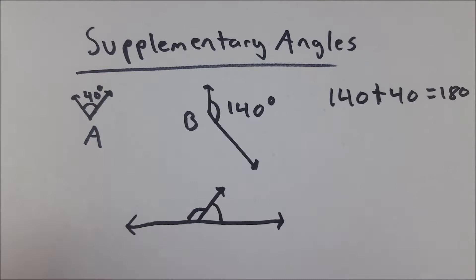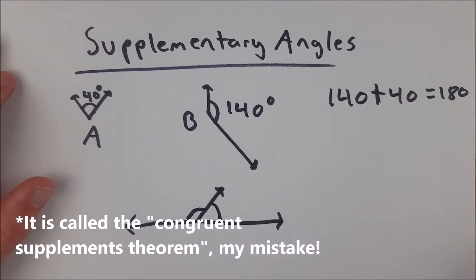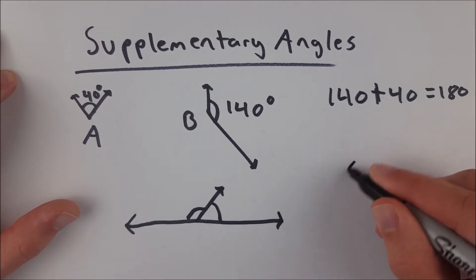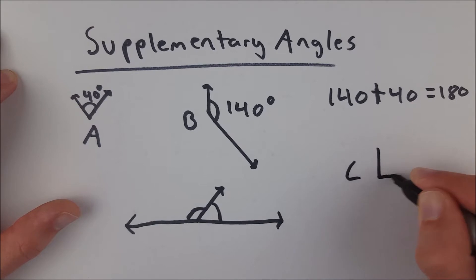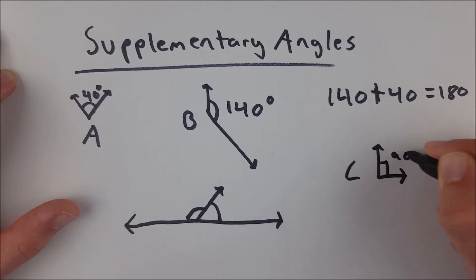Additionally, there's something called the supplementary angles theorem that tells us if two angles are supplementary to the same angle, they must be congruent. So if we had an angle C, like this, that was 90 degrees, just for example, 90 degrees,